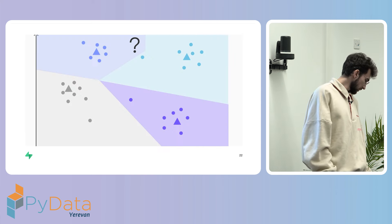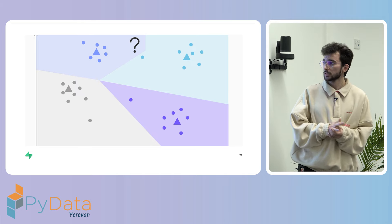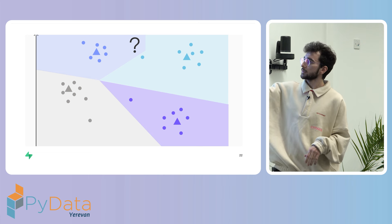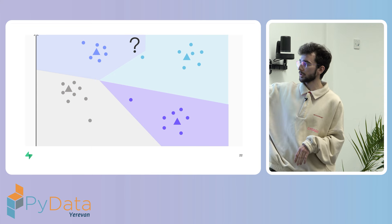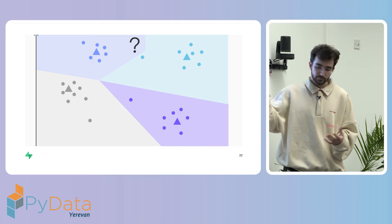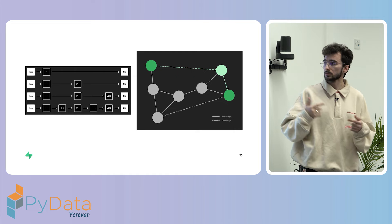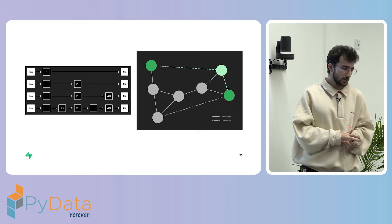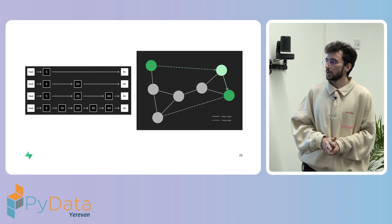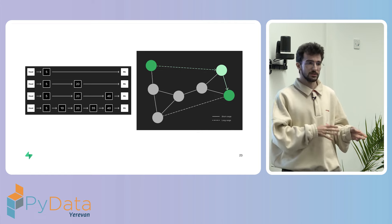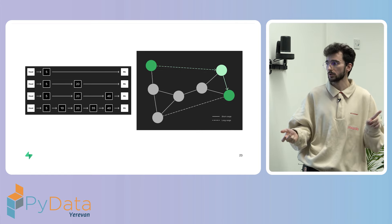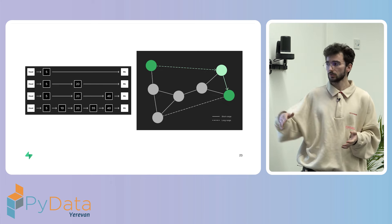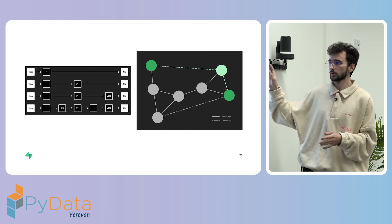Another index type is the inverted file index. Here we group vectors into segments and search only in one or a few close clusters to find similar vectors. PG vector initially worked with an IVF flat implementation. The last one is HNSW — hierarchical navigable small world — a very efficient algorithm with complexity of O(n log n) for all operations: search, insert, and delete. With IVF flat, you have to rebuild the index frequently if you do a lot of inserts or deletions. With HNSW, you don't have to do this — it remains effective.